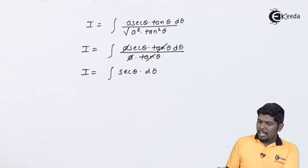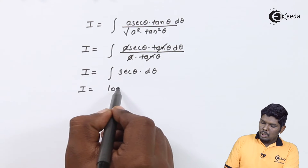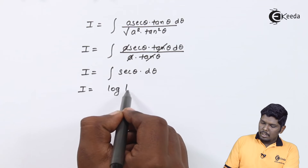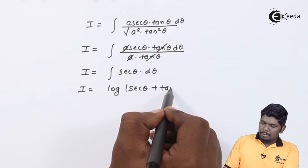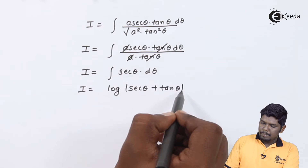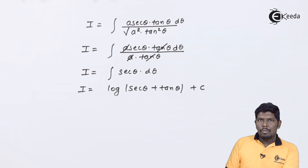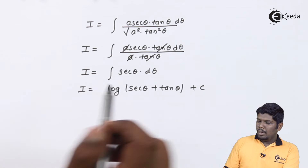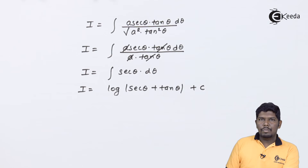Now we know that the integral of sec theta is equal to log of sec theta plus tan theta plus C. But this answer is in terms of theta and we need the answer in terms of x. For that, we will try to convert tan theta and sec theta in terms of x.